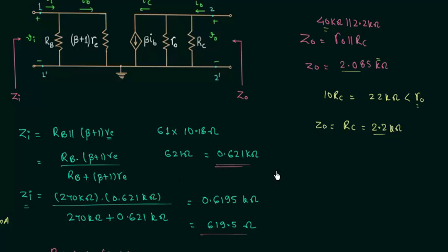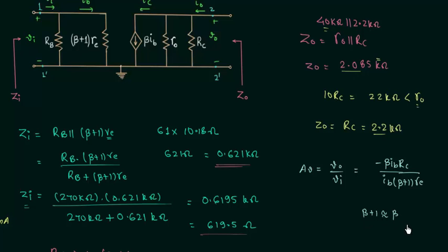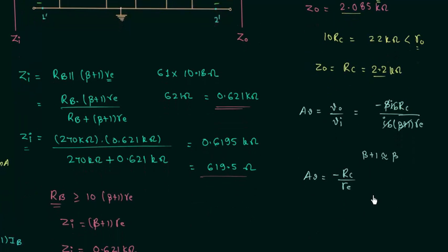In the next part we find the voltage gain. The voltage gain equals the ratio of output voltage to input voltage, which is equal to −beta × IB × RC divided by IB × (beta + 1) × RE'. Considering beta + 1 ≈ beta, the IB and beta terms cancel, giving voltage gain equal to −RC / RE'. Dividing RC by RE' gives −216.1. The negative sign indicates a 180-degree phase shift between output and input voltages.